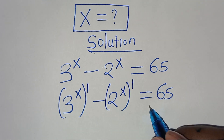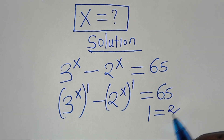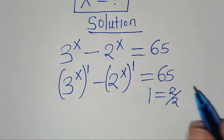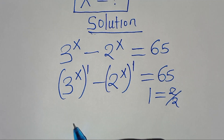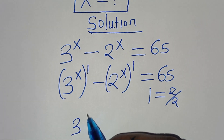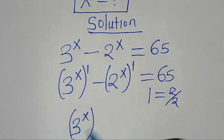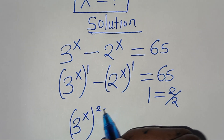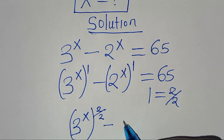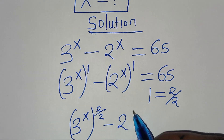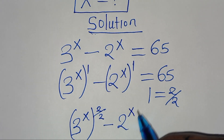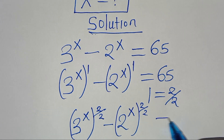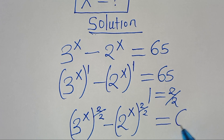We can express 1 as the same thing as 2 over 2. Substituting this, we have 3 to the power of x raised to the power of 2 over 2, minus 2 to the power of x raised to the power of 2 over 2, this is equal to 65.